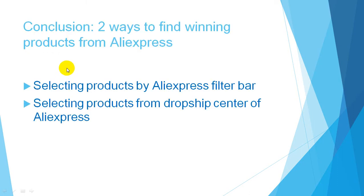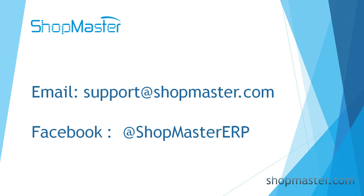Let's make a conclusion. There are two ways to find winning products from AliExpress: first, selecting products using the AliExpress filter bar; second, selecting products from the Drop Shipping Center of AliExpress. That is all my sharing on finding winning products with AliExpress today. If you have any questions about using the ShopMaster extension to filter products, you are welcome to contact us through the following methods. Thank you for watching and I will see you next time.